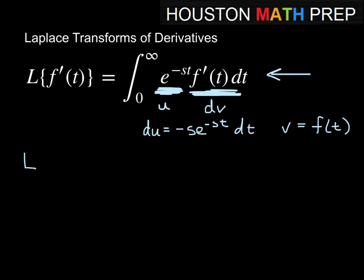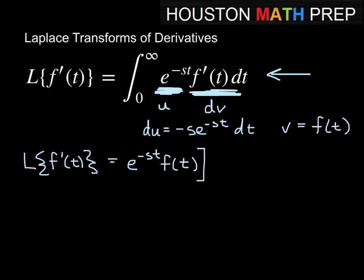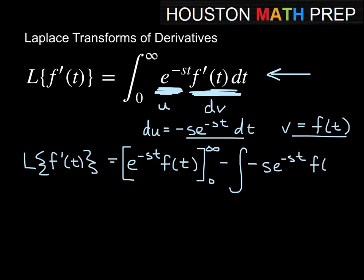The Laplace transform of f prime of t equals u times v, which is e to the minus st times f of t, evaluated from 0 to infinity, minus the integral of v du. Writing out v du, that's negative s e to the minus st times f of t dt.